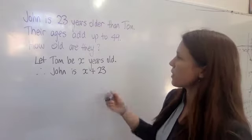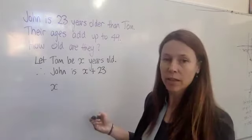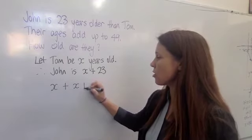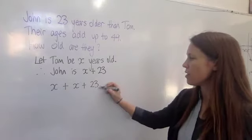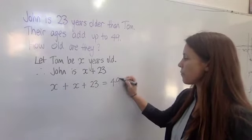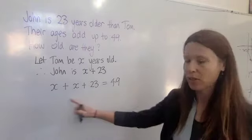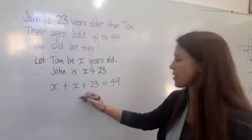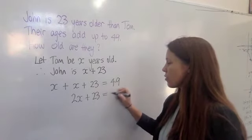We know something else. Their ages add up to 49. So, I can take Tom's age and then add it to John's age, Tom and John, and that equals 49. The first thing to do when solving this is to gather up like terms. We've got x and another x, so that gives me 2x plus 23 equals 49.